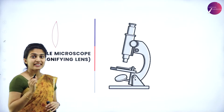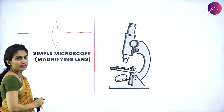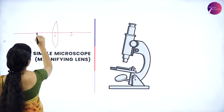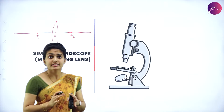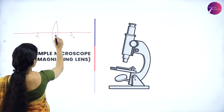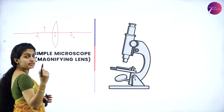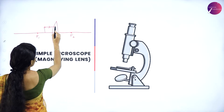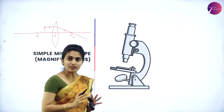We use a bi-convex lens. The principal axis passes through the optic center, and the lens has two focal points — F1 and F2. The object is placed between the optic center and the principal focus. For image formation, any ray passing parallel to the principal axis must meet at the principal focus — that is one ray. For the image to form, two lines must intersect each other.